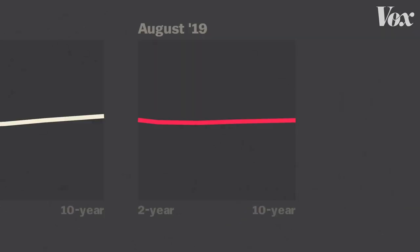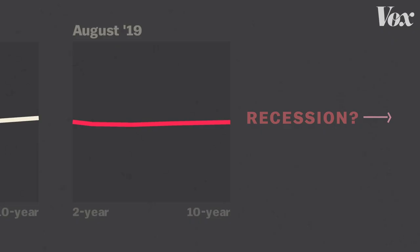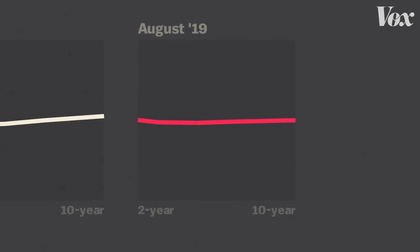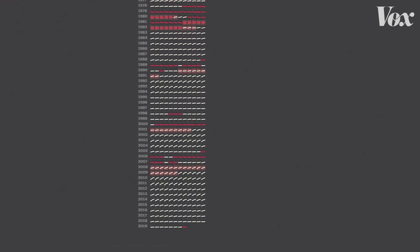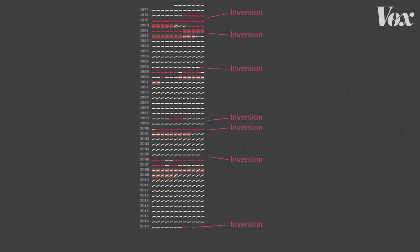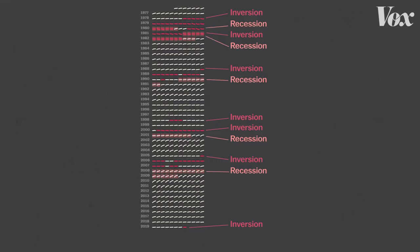And that's what's happening now. So, is a recession coming? Not necessarily. But when we redesign the chart so we can see all the years on a single screen, it's pretty safe to say: when the yield curve inverts, it's not a good sign.